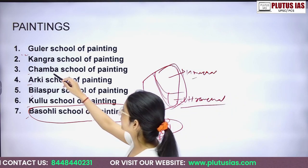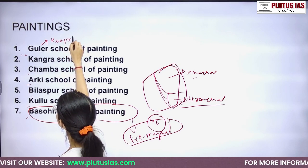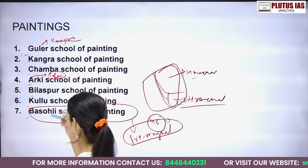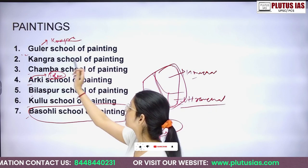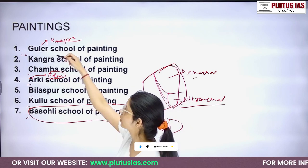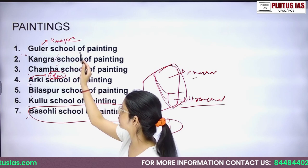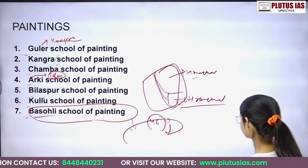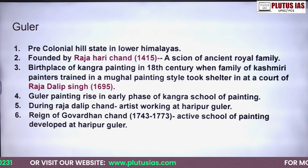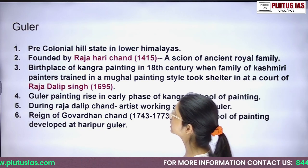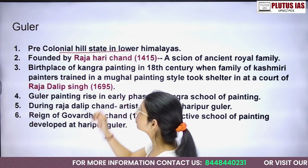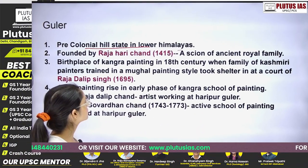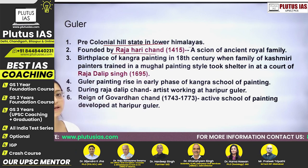The Guler School of Painting — Guler is a region in Kangra — and Arki School of Painting is in Solan. Kangra, Chamba, Bilaspur, and Kullu are all districts. Basoli is in Jammu and Kashmir. The Guler School of Painting was a pre-colonial hill state school, founded at the time of Raja Hari Chand.